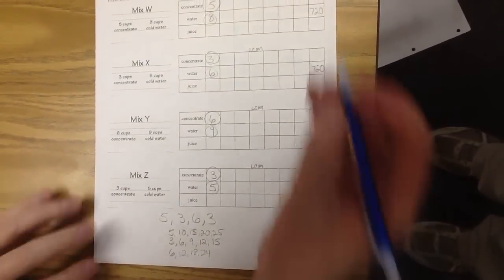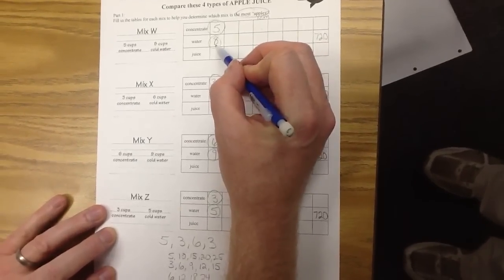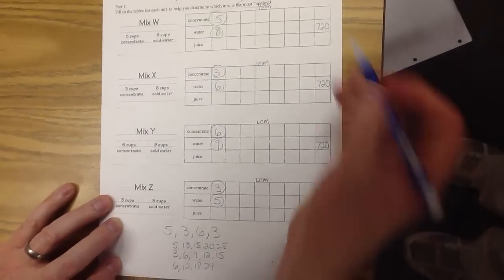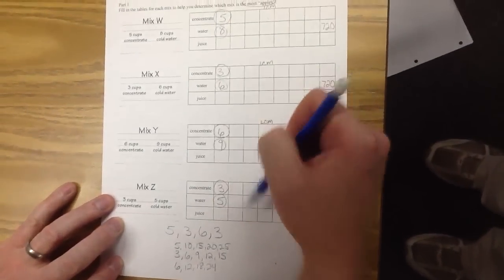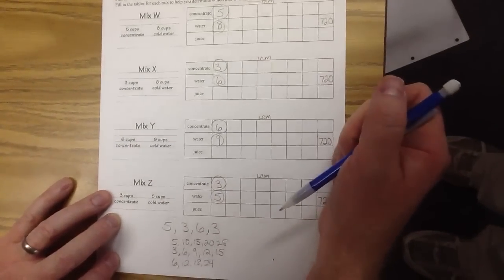And then use the same scale factor that it takes to make your concentrate to that LCM for the water. Once you find a common number of cups of concentrate or a common number of cups of water, compare them to find out which one's the most appley.